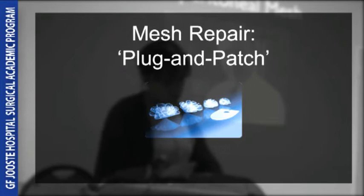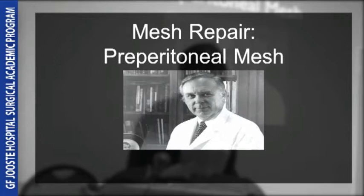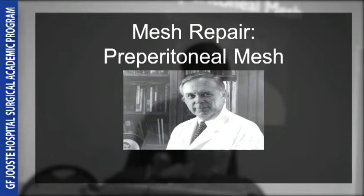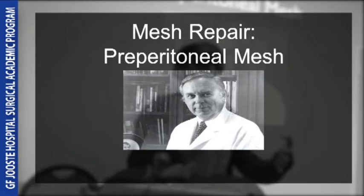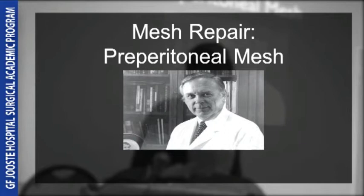The preperitoneal mesh operation was described by Lloyd Nyas, who was head of the surgical department at the University of Illinois on the Chicago campus and died in 2008 after making numerous contributions to surgery. This involves an incision slightly higher than for a Lichtenstein repair. You enter the preperitoneal space through the transversalis fascia and deploy a large mesh between the peritoneum and the transversalis after dissecting out all the hernias.